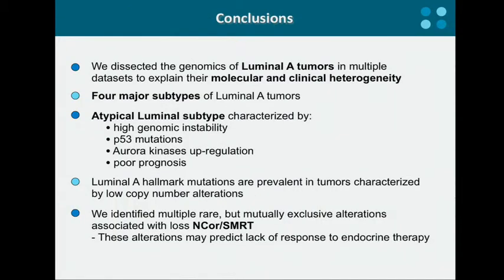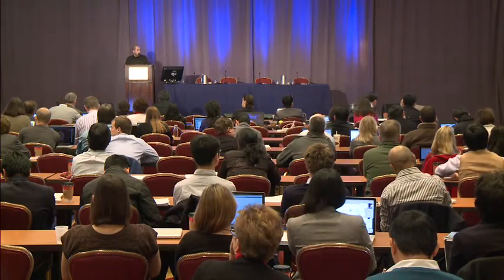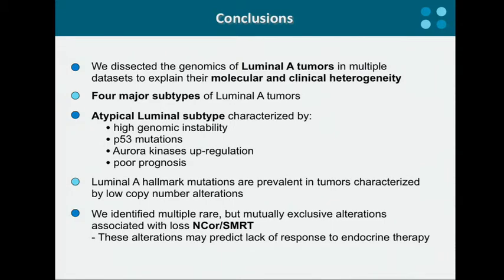In conclusion, we dissected the genomics of luminal A tumors across multiple datasets to explain their molecular and clinical heterogeneity. We identified five major subtypes of luminal A tumors characterized by distinct copy number alterations and somatic mutations. In particular, we found an atypical luminal A subtype characterized by high genomic instability, P53 mutation, aurora kinase upregulation, and associated with poor prognosis. Furthermore, luminal A hallmark mutations — specifically PIK3CA and GATA3 — are prevalent in tumors with low levels of copy number alteration. By pathway analysis, we identified multiple rare but mutually exclusive alterations associated with loss of corepressor complexes, which may predict lack of response to tamoxifen treatment.